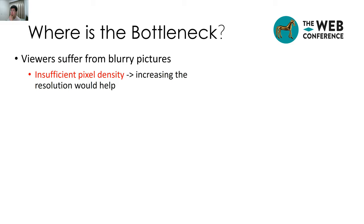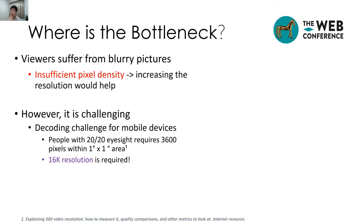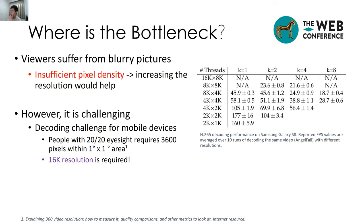Of course, increasing the resolution would help, but it's challenging. First, the decoding part is challenging for mobile devices. According to some medical studies, people with normal eyesight would require more than 3000 pixels within one square degree area. With this pixel density, 16K resolution is required. We conduct some decoding performance study on mobile devices and show the results on the right. Each row corresponds to the total resolution we need to decode, and each column corresponds to the pieces we divide this video into and the number of threads used to decode the video.